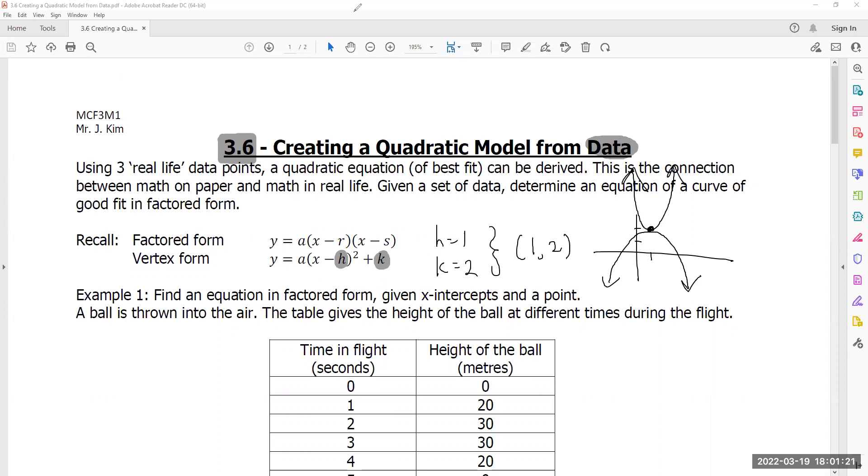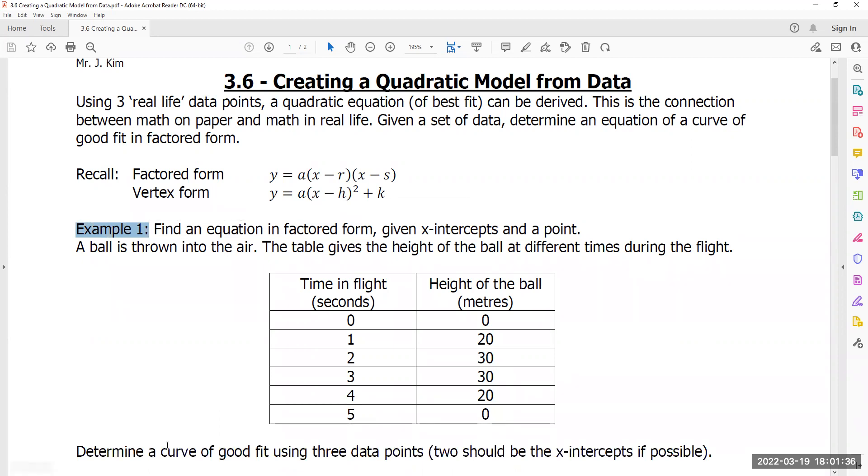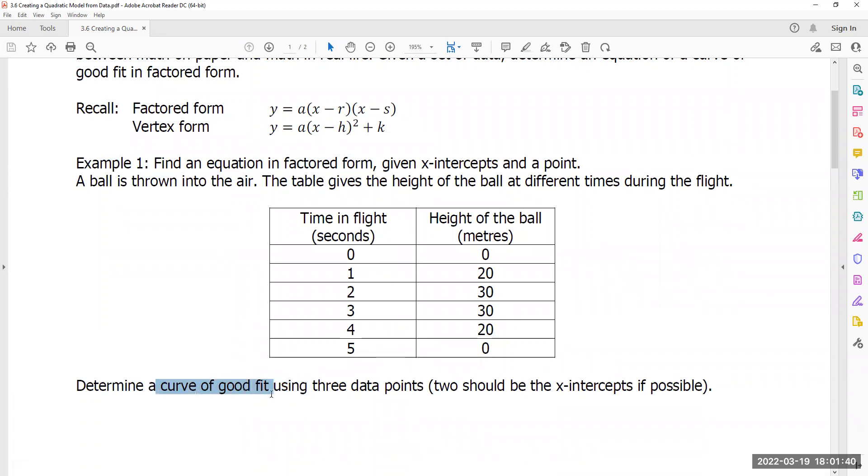If the question is giving you a bunch of data points, like I am giving you right now, and it asks you to create an equation in factored form, well, example one is going to cover how you can do that, to create a what I'm going to call a curve of good fit, and not the best fit, because, you know, we're not computers here. We're trying to find a decent equation that seems to work, and that is acceptable in modeling our real life data points.